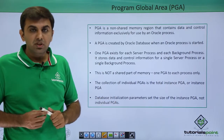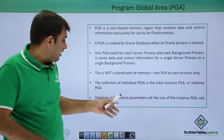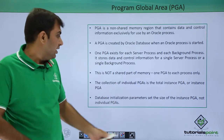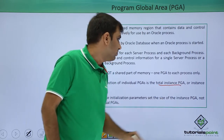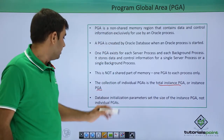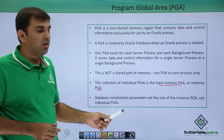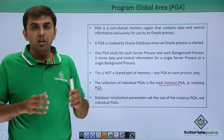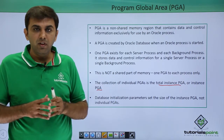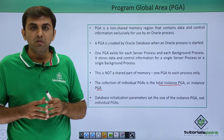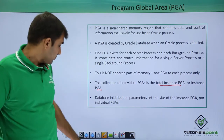The collection of individual PGAs — like if you have 10 users, 10 PGAs — is called the total instance PGA. The database initialization parameter sets the size of the instance PGA, not for the individual PGA. So as a DBA, in the initialization parameter file you need to define the size of the total PGA, not for the individual PGA.